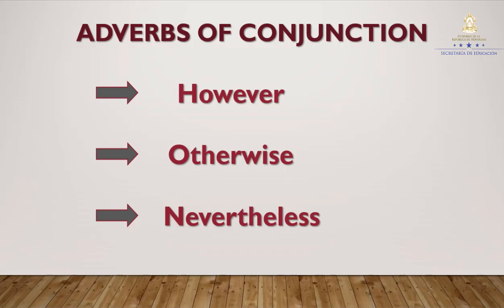Here we have: however. Este lo usamos para hacer contrastes en una oración de algo que ya se dijo previamente. El segundo es otherwise. Este se usa cuando se da una orden o una sugerencia, para mostrar cuál será el resultado en caso de que esa sugerencia o esa orden no se siga. El tercero, nevertheless. Este es similar a however, porque también se usa para hacer contrastes en una oración de algo que ya se dijo previamente.